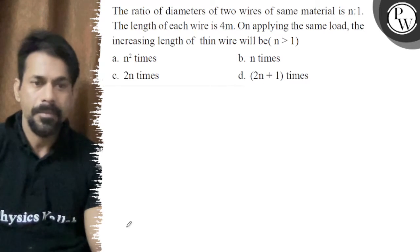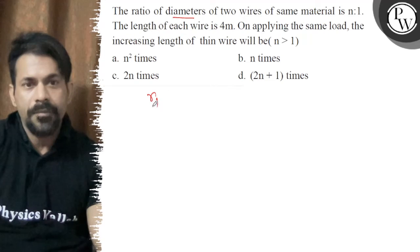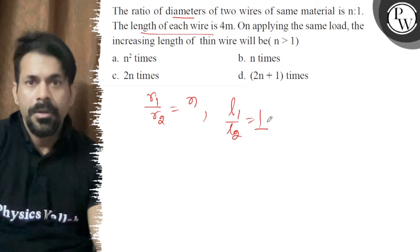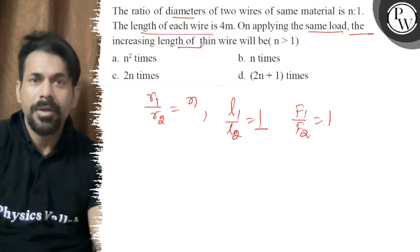So we're given the diameter ratio r1/r2, length of each wire l1/l2 = 1, same load f1/f2 = 1. The wires are of the same material, so Y is constant.